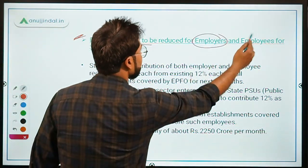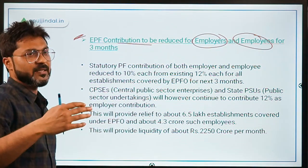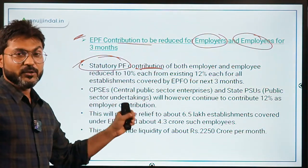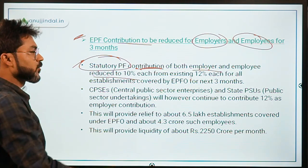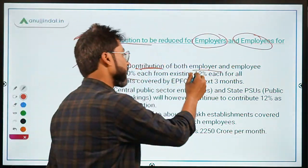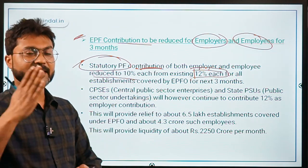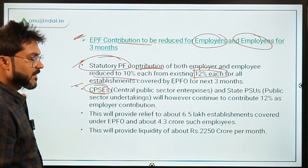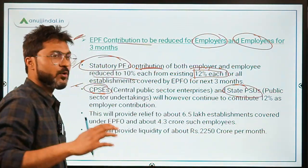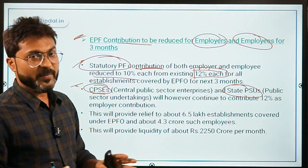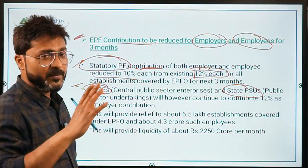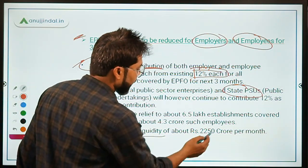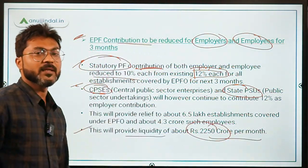The statutory PF contribution of both employer and employee was reduced from 12% to 10% for three months. This reduction did not apply to employees of central public sector undertakings or state government PSUs. The government estimated this would provide liquidity of about ₹2,500 crore per month.